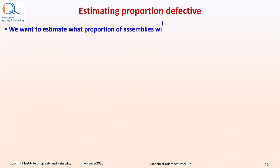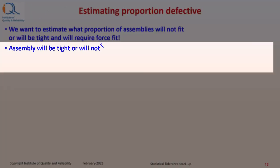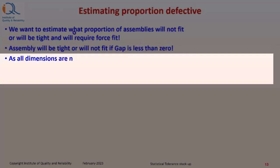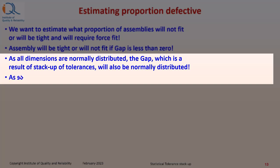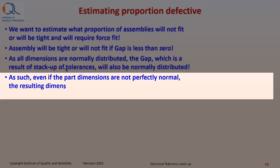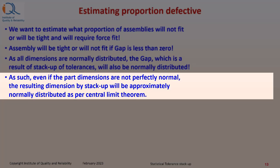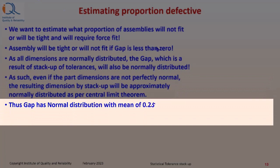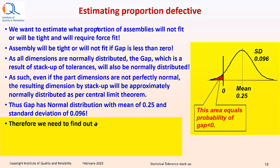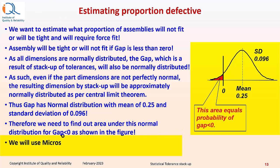We want to estimate what proportion of assemblies will not fit or will be tight and will require force fit. Assembly will be tight if gap is less than 0. As all dimensions are normally distributed, the gap which is a result of stack-up of tolerances will also be normally distributed. As such, even if the part dimensions are not perfectly normally distributed, the resulting dimension by stack-up will be approximately normally distributed based on central limit theorem. This gap has normal distribution with mean of 0.25 and standard deviation of 0.096. Therefore, we need to find out area under this normal distribution for gap less than 0 as shown in the figure. We will use Microsoft Excel function norm.dist to find this area.